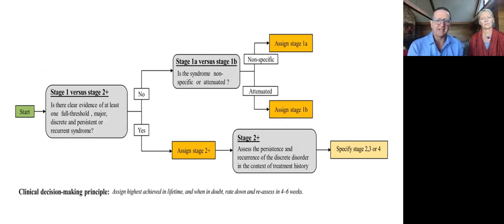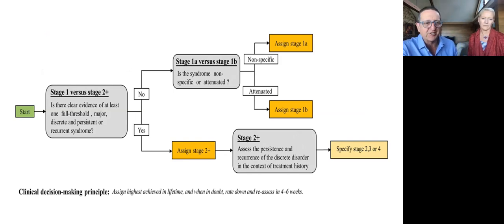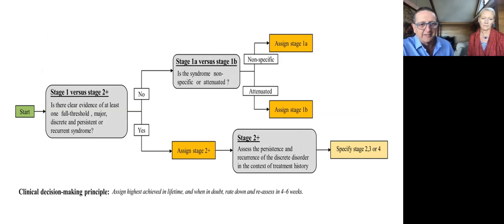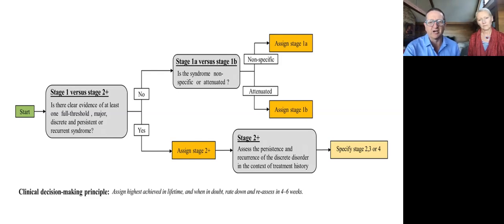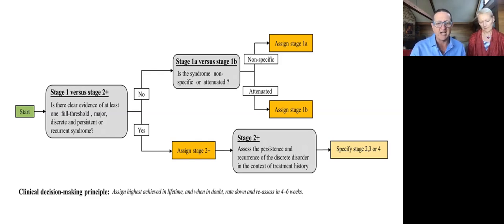In terms of how to differentiate people, it just isn't that complicated. The young people you see — the first decision you need to make is basically: have they gone over the line? Do they already have a well-established first episode of a severe mood or psychotic syndrome? If not, you go back to stage 1A versus 1B. Are they in the less severe, less specific 1A category, or do they have an attenuated depressive, bipolar, psychotic, or very severe comorbid-type syndrome? If they've already developed a severe syndrome, the next step is simply to look at how long and how persistent, how recurrent that has been. What can sound very complicated in real life, clinically just isn't that complicated in terms of assigning initial stage to a person who presents.